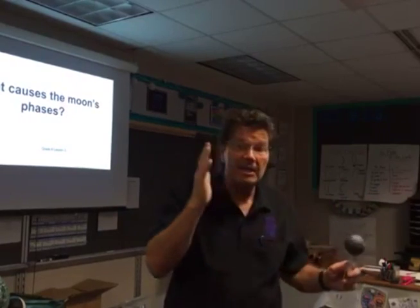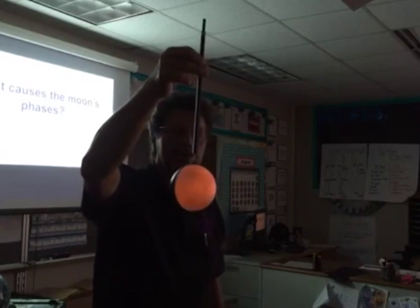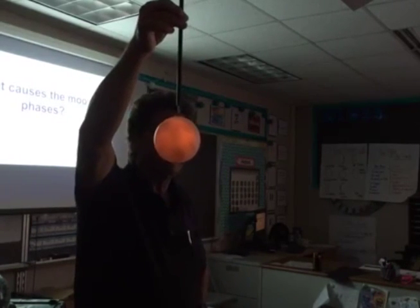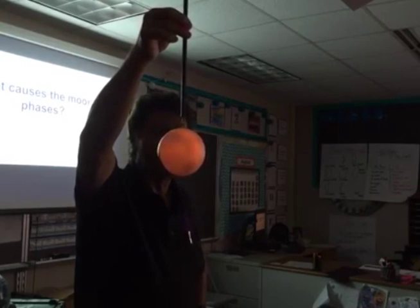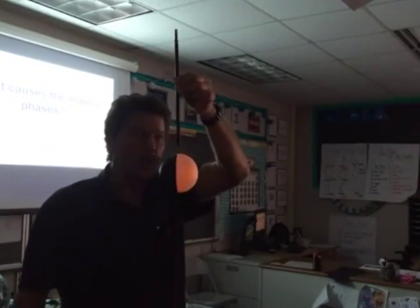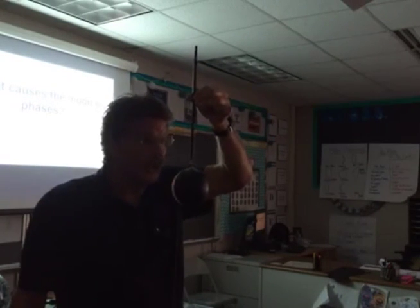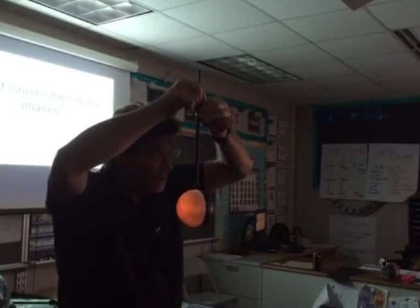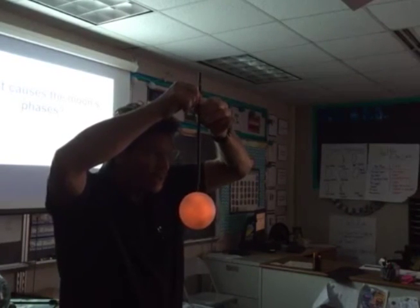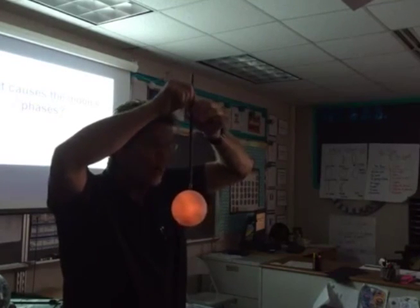Because of the moon's position, we look at a different phase every time. Here is a model of the moon — that looks like a full moon. As I rotate this around, depending on where you're standing you might see a quarter moon, a crescent, or no moon at all — that's called a new moon. All eight phases have a different name, and we're going to learn those today.